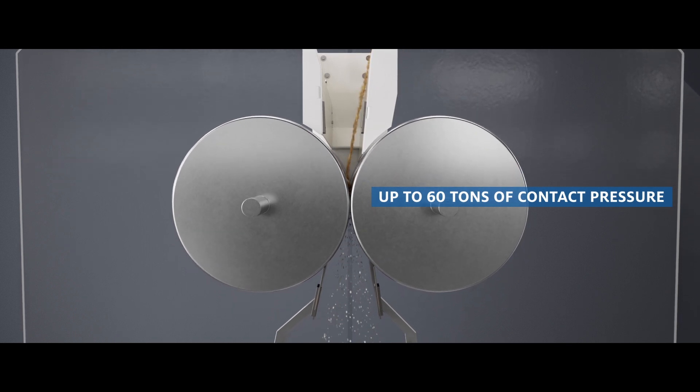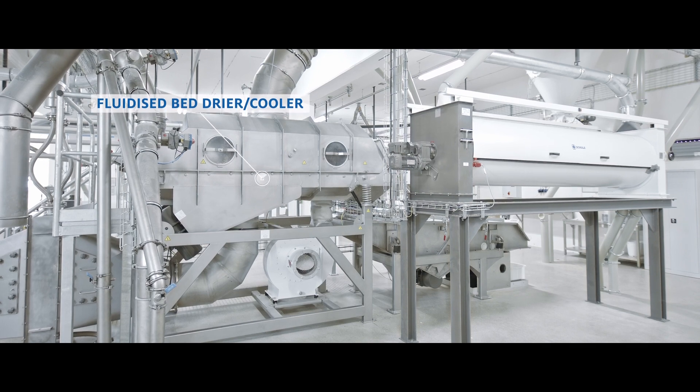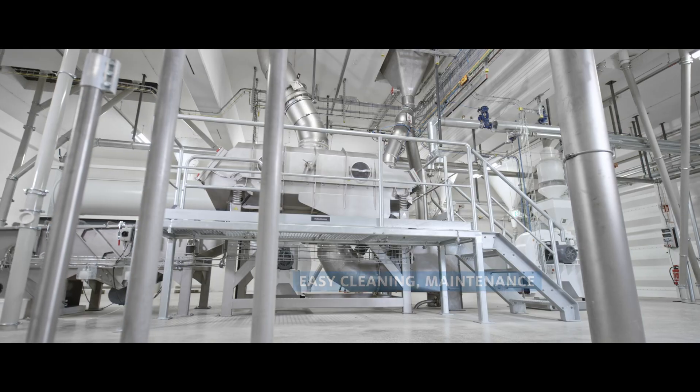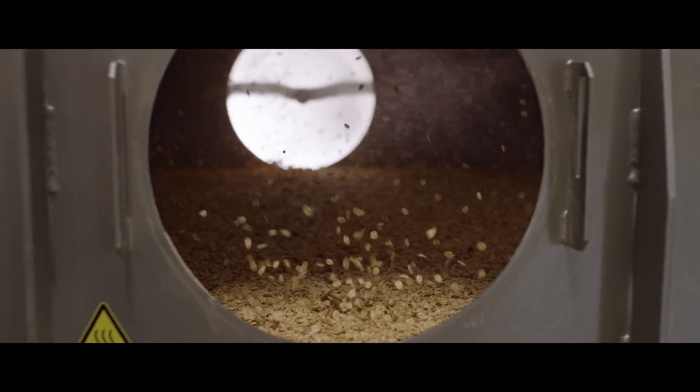Through uniform drying and cooling in the fluidized bed dryer and cooler, the product reaches the desired final moisture content and temperature. From there, the flakes fall directly into the silo cell.